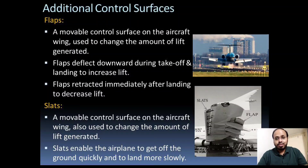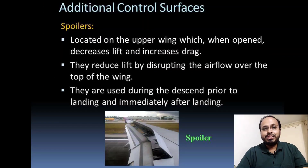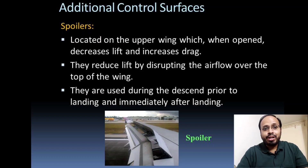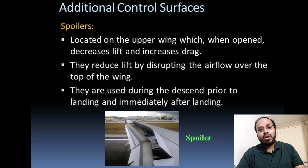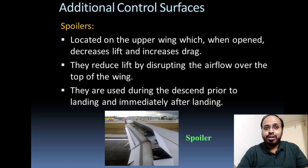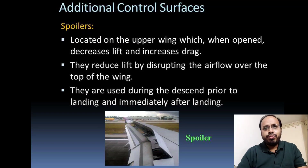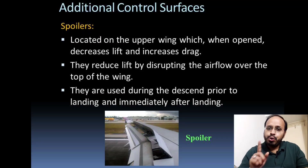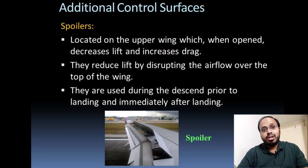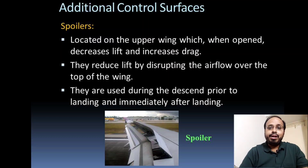An additional control surface is the spoiler, located at the trailing section of the aircraft wing on the upper surface. When opened, it decreases lift and increases drag by disturbing the airflow over the top of the wing. Spoilers are generally used during landing in order to achieve immediate touchdown or to reduce ground roll during the landing operation.